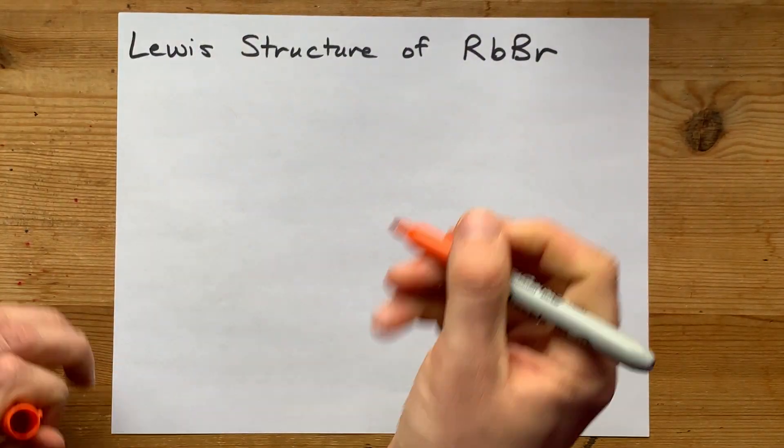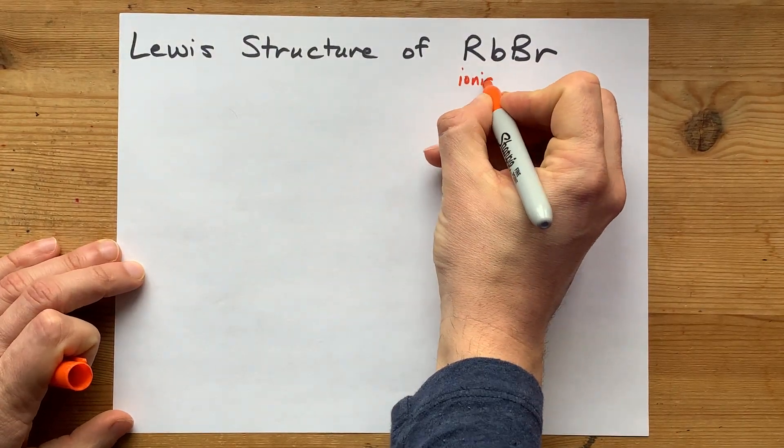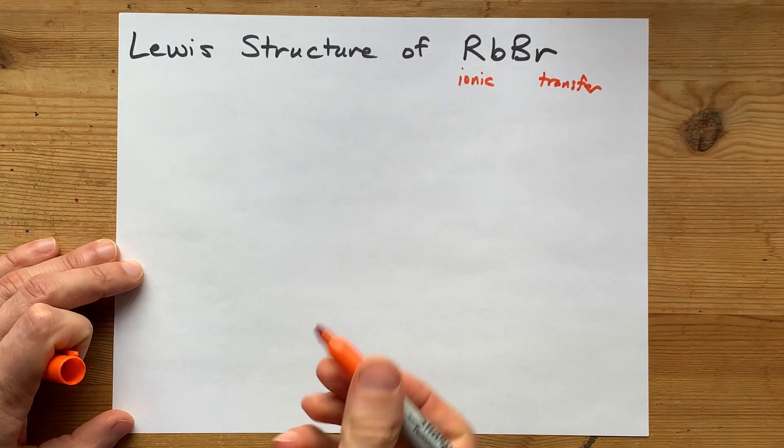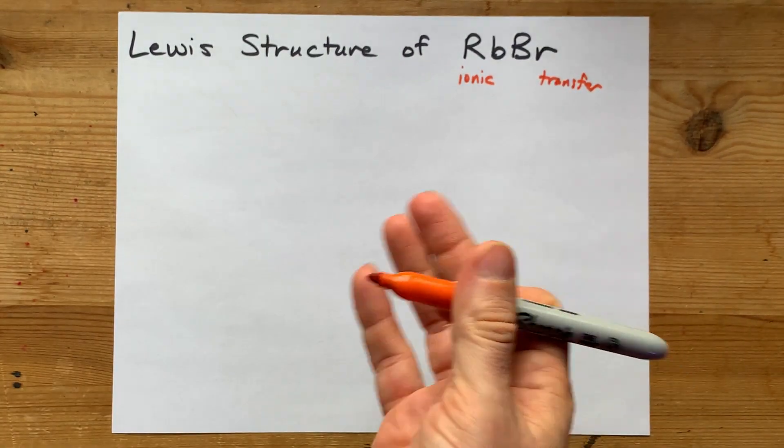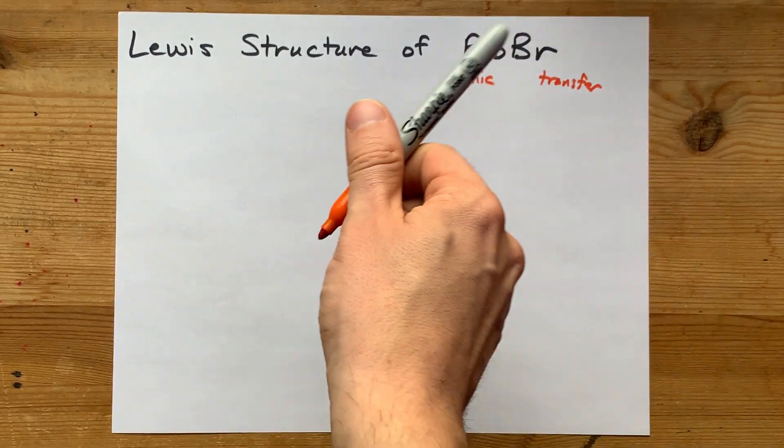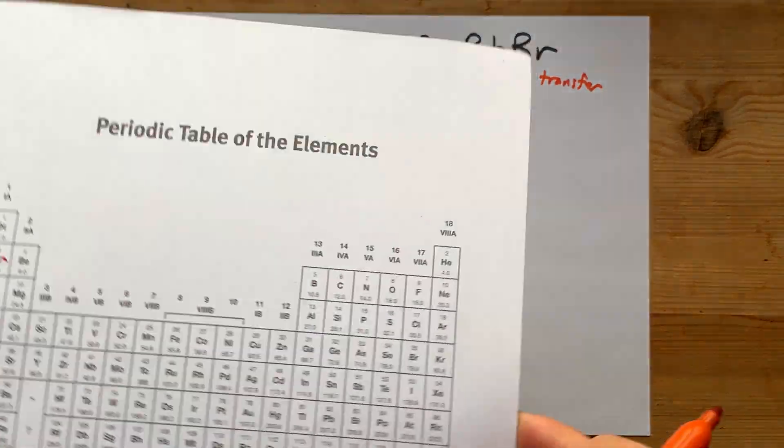And when metal and non-metal get together, they form an ionic compound, which is a transfer of electrons from one to the other to create ions. In this case, well in any case, it's always the metal giving away electrons to the non-metal.